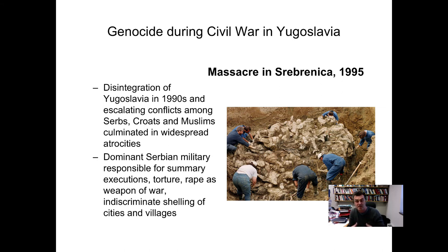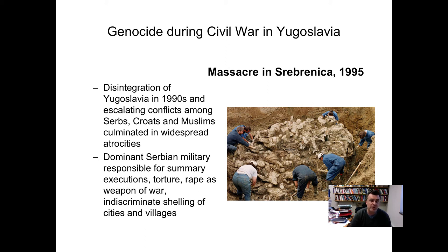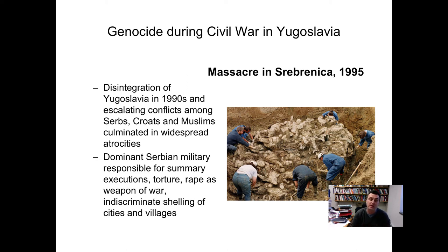Sadly, the Holocaust was not the last genocide in the 20th century. The disintegration of Yugoslavia in the 1990s saw conflict between Serbs, Croats, and Muslims culminate in widespread atrocities. The massacre in Srebrenica in 1995 was one of the most horrific, where the dominant Serbian military was responsible for summary executions, torture, and rape as a weapon of war. That was the first time rape was considered a war crime and later codified into human rights law — prior to that it was not considered in legal terms as a concerted military strategy and therefore a war crime.